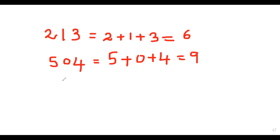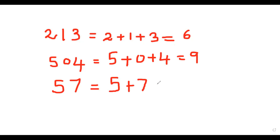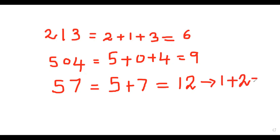Another example: 57. In order to find the Digital Root of 57, we add the digits 5 plus 7, which gives 12. But the Digital Root must be a single digit, so we add again: 1 plus 2, that is 3. So 3 is the Digital Root of 57.